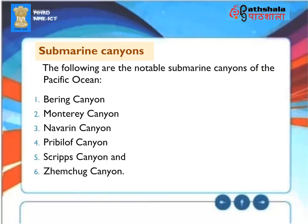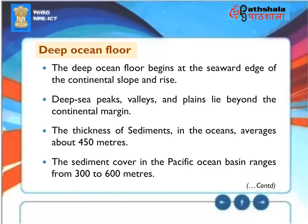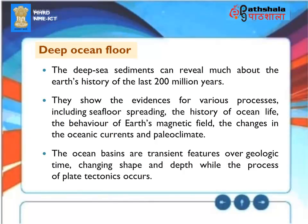Deep Ocean Floor: The deep ocean floor begins at the seaward edge of the continental slope and rise, with deep sea peaks, valleys, and plains beyond the continental margin. The thickness of sediments in the oceans averages about 450 meters, while the sediment cover in the Pacific Ocean basin ranges from 300 to 600 meters. Deep sea sediments can reveal much about the Earth's history over the last 200 million years, showing evidence of seafloor spreading, the history of ocean life, the behavior of Earth's magnetic field, and changes in oceanic currents and paleoclimate. Ocean basins are transient features over geologic time, changing shape and depth as plate tectonics occurs.